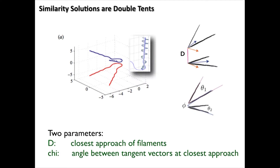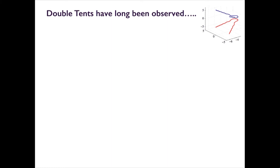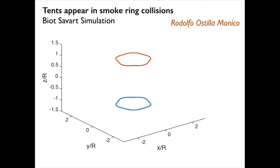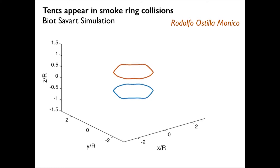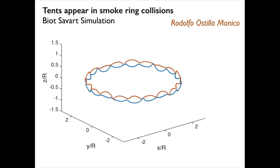What you find is that the similarity solution that comes out looks like a double tent. There are two tents, and the tents meet at a point — and the point is where all the action is. We spent a lot of time characterizing all the solutions of these tents. Double tents, if you look in the literature, have long been observed. There's a paper from the 80s where two rings are colliding and you see they make double tents. Vortex reconnection often has double tents. We did simulations of this — this is Rodolfo, who is a postdoc at Harvard — using the Biot-Savart equations, and as the rings collide, they make lots of double tents.